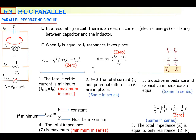Remember: properties two, three, and five are the same in both series and parallel resonating circuits, but first and fourth are opposite in series and parallel.